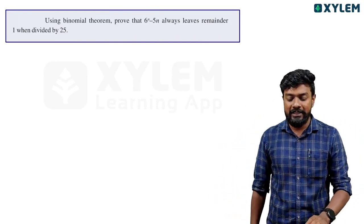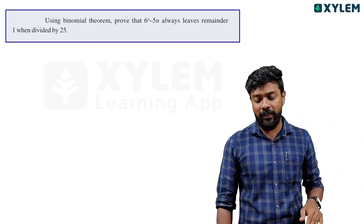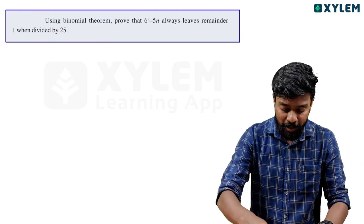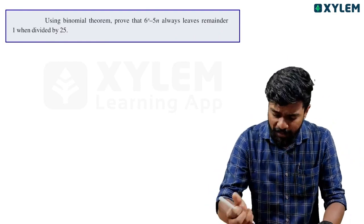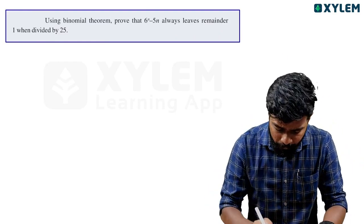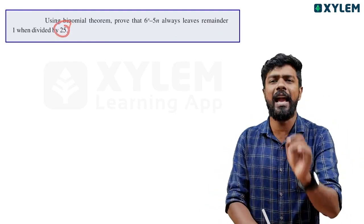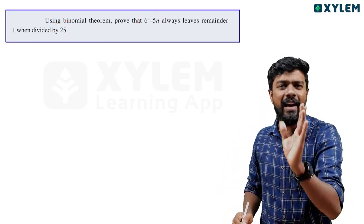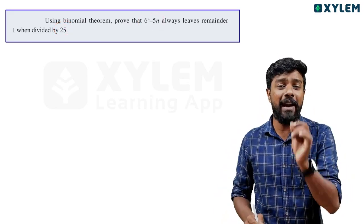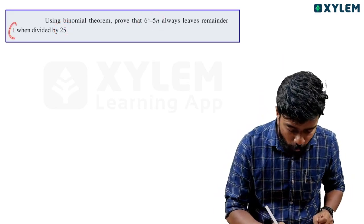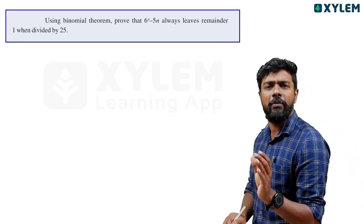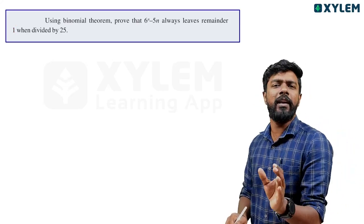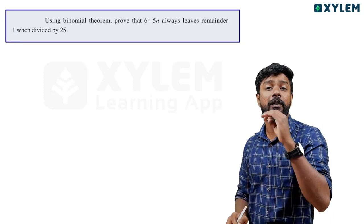Using the binomial theorem, I will prove that 6 raised to n minus 5n always leaves remainder 1 when divided by 25. I will answer these two questions.